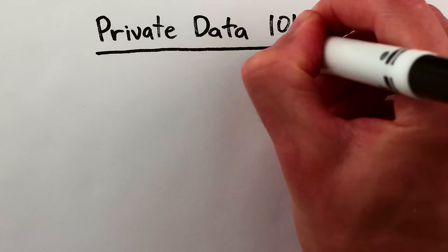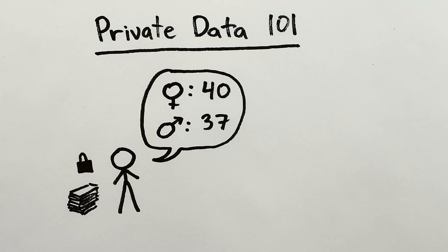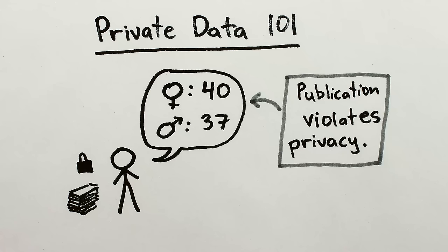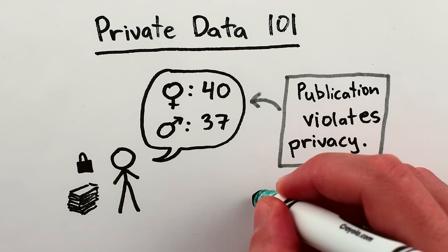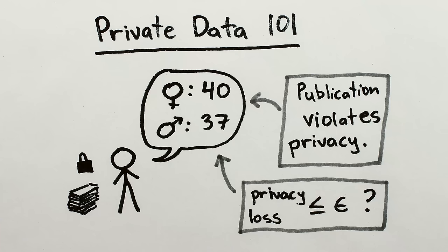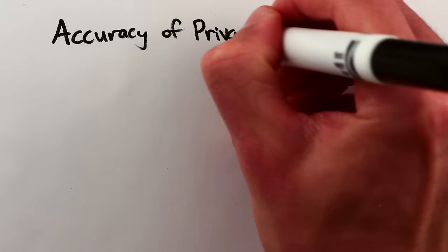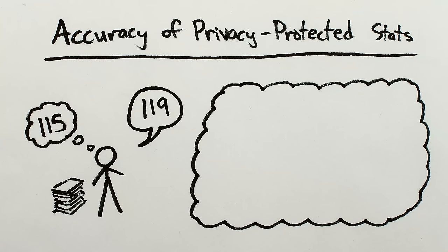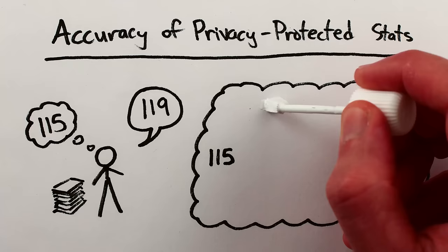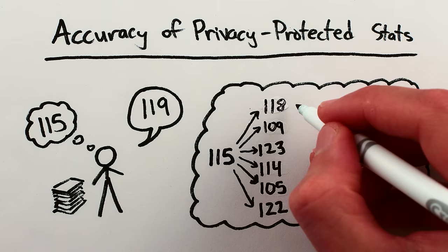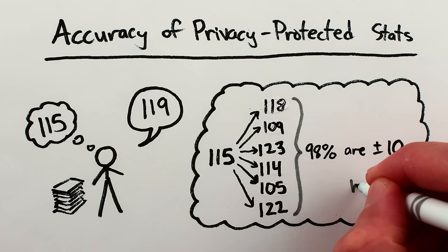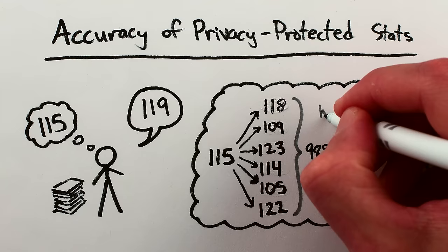First and foremost, it is in principle impossible to publish useful statistics based on private data without in some way violating the privacy of the individuals in question. And if you want to provide a mathematically guaranteed limit on the amount of privacy violation, you have to randomly jitter the statistics to protect the private data. The accuracy of the information after being jittered is generally described probabilistically by saying something like, if we randomly jittered the true value for the population of this town a bunch of times, 98% of the time our jittered statistic would be within 10 people of the true value. So accuracy has two components: how close you want your privacy-protected statistic to be to the real answer, and how likely it is to be that close.